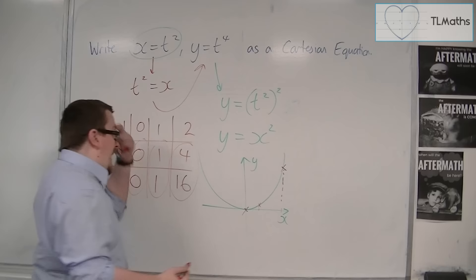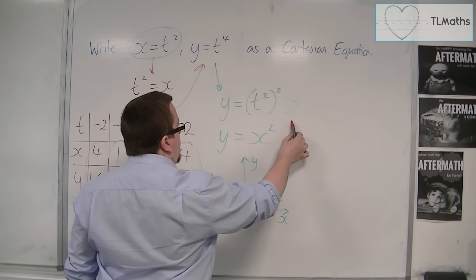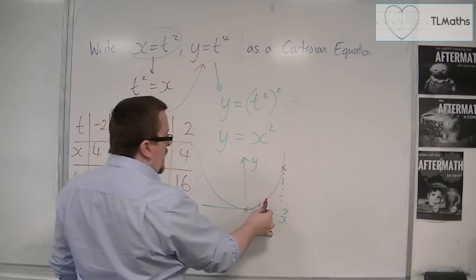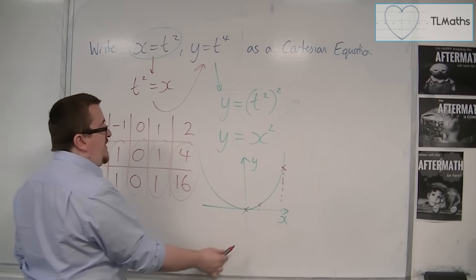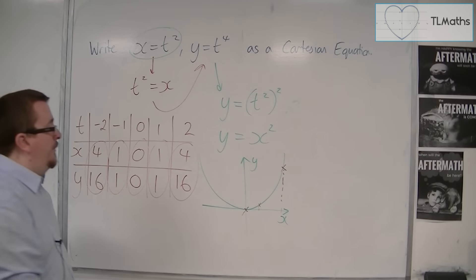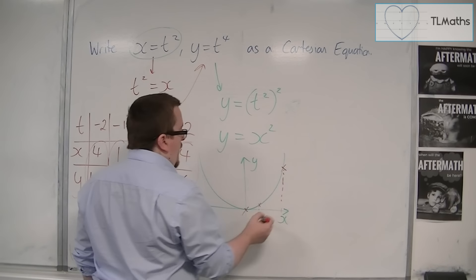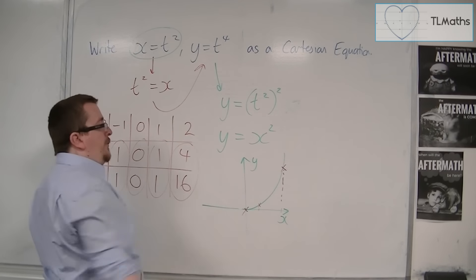So essentially, as t is changing, as it's going from negative to positive, the coordinate that's on the curve, as t gets closer to 0, goes along this curve, gets to that point. But then when t goes into positive values, the coordinates go back up in that direction. And so, this side of the curve does not exist.